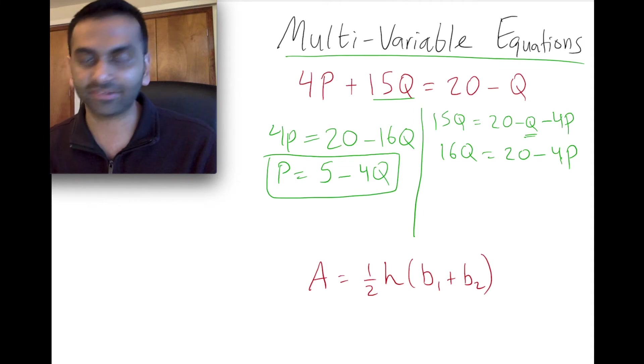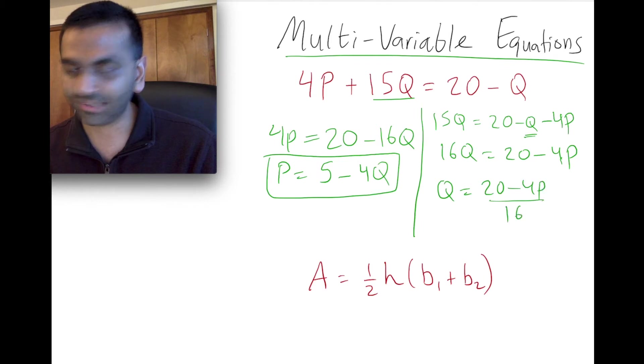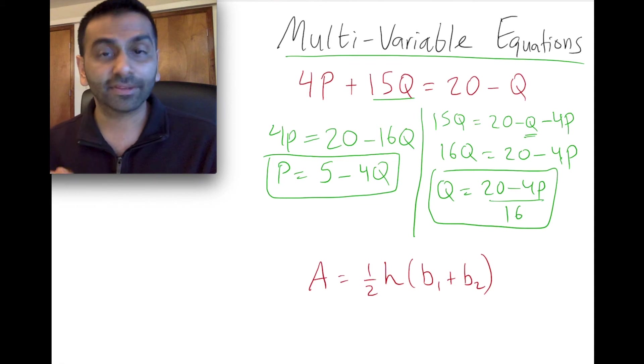And final step, divide both sides by 16, so I get Q equals 20 minus 4P all over 16. Now you can split this up, of course, if you wanted to, and say 20 over 16 minus 4P over 16, same thing. Either way, this is what you get.